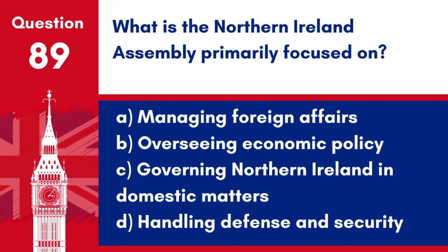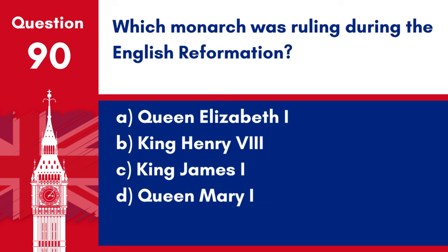Question 89. What is the Northern Ireland Assembly primarily focused on? a. Managing foreign affairs. b. Overseeing economic policy. c. Governing Northern Ireland in domestic matters. d. Handling defence and security. Answer: c. Governing Northern Ireland in domestic matters. The Northern Ireland Assembly is primarily focused on governing Northern Ireland in domestic matters such as health, education and transportation.